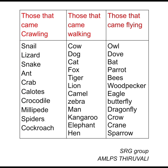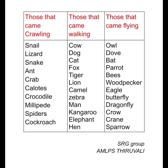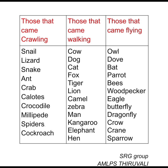Crawling means moving on the ground. Animals that crawl include: Snail, Lizard, Snake, Ant, Crab, Caterpillar, Crocodile, Millipede, Slug, Spider, Cockroach.